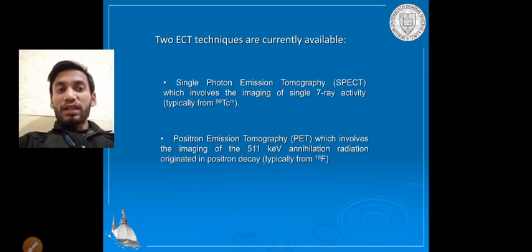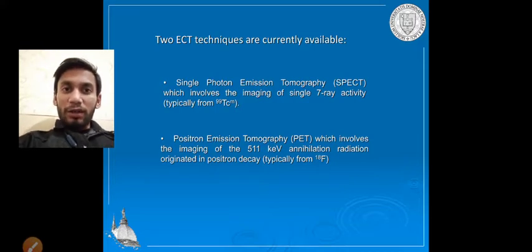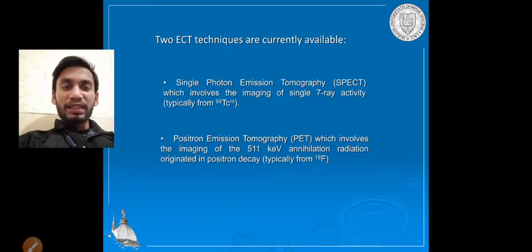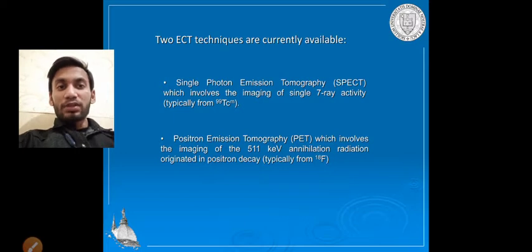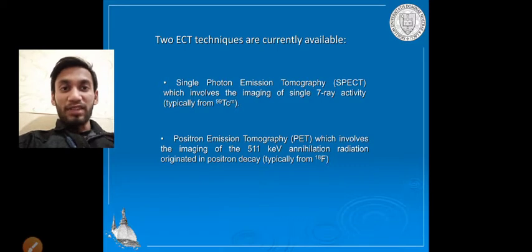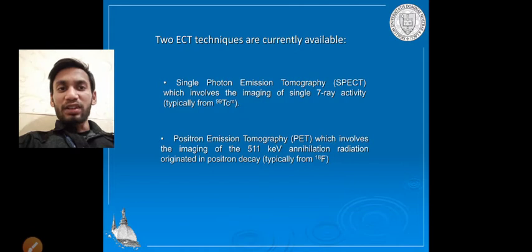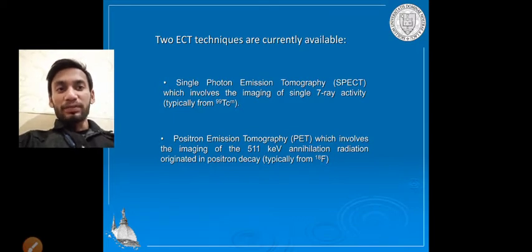In PET, imaging involves annihilation radiation originating from positron decay. We use fluorine-18 (F-18) as the radioactive isotope. In the imaging we take radiation of 511 kilo-electron volts, which originates from the positron decay, typically from F-18.